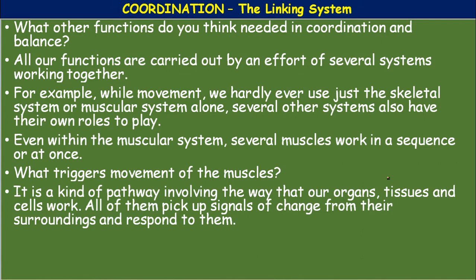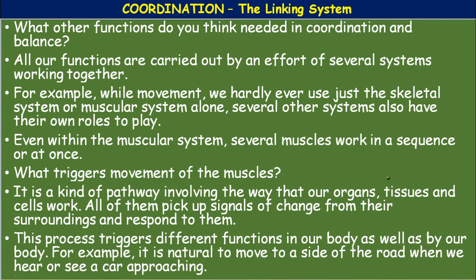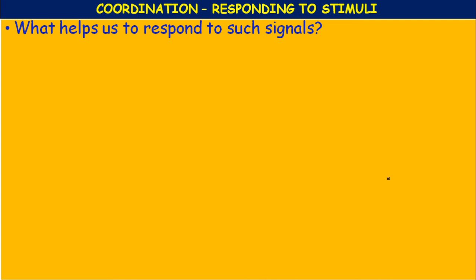The circulatory system provides more glucose to the muscles of the limbs — that is coordination. When you are reading or concentrating, the body provides more glucose to the brain. All organs, tissues, and cells pick up signals of change from their surroundings and respond to them. For example, it is natural to move to the side of the road when we hear or see a car approaching.